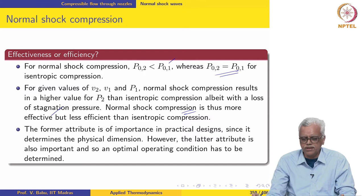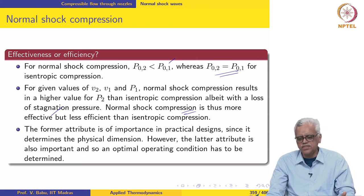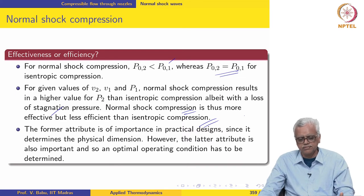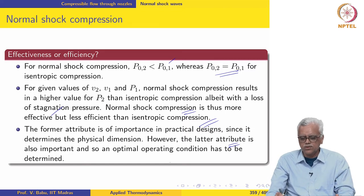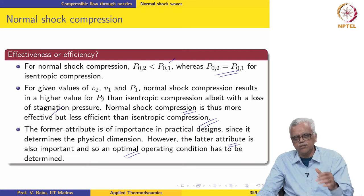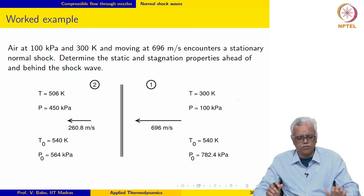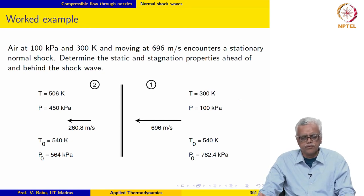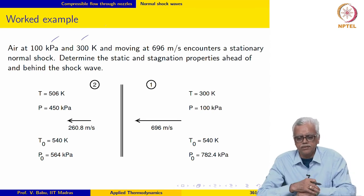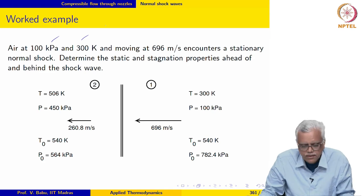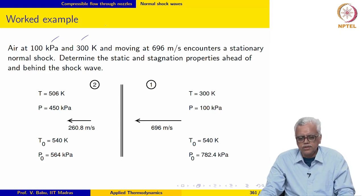Normal shock compression is more effective but less efficient than isentropic compression because of loss of stagnation pressure. Effectiveness is very important in practical design because it determines the physical dimension. Efficiency — loss of stagnation pressure — is also important, so you have to determine an optimal design. For the worked example: air at 100 kPa and 300 Kelvin moving at 696 meters per second encounters a stationary normal shock; determine the static and stagnation properties ahead of and behind the shock wave.